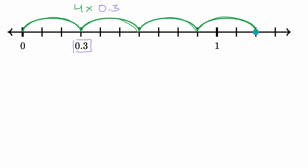And so what is this going to be equal to? Well, you can see you go from 3 tenths to 6 tenths to 9 tenths, and then you could view this as 12 tenths. But 12 tenths is the same thing as 1 and 2 tenths, so you could view this as 1.2, 1 and 2 tenths.